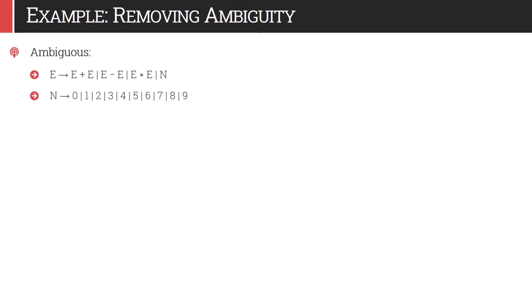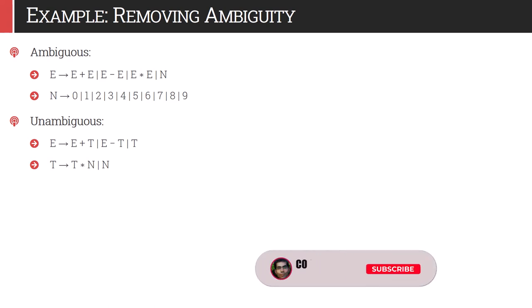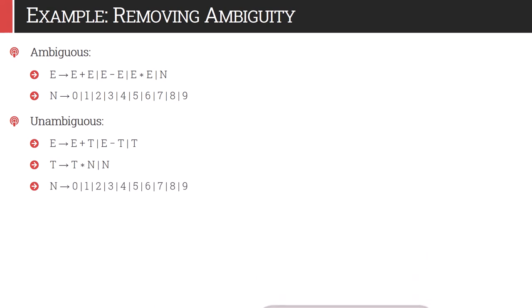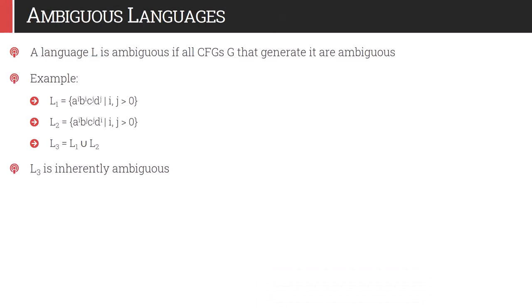Another example: E gives E plus E, E minus E, E into E, and n. Plus and minus have the same priority and are left-associative, so we write the unambiguous grammar as E gives E plus T or E minus T, and T. Using T we write the production for E into E — again there are two E's, so we write the first as T and the second as n. Using n we can derive the zero to nine digit symbols.